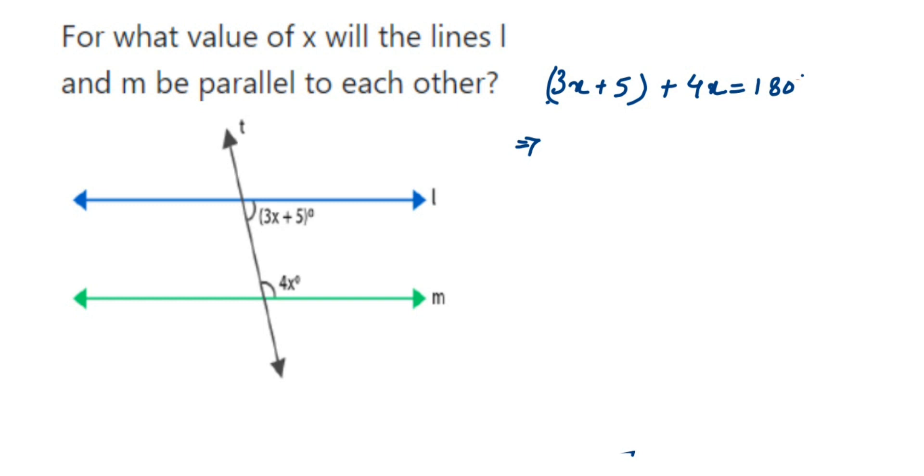Now transpose 5 to the other side, so 7x will be equal to 180 minus 5. 7x equals 175. Now x will be equal to 175 divided by 7. The 7 is in multiplication, and when transposed it comes in division.